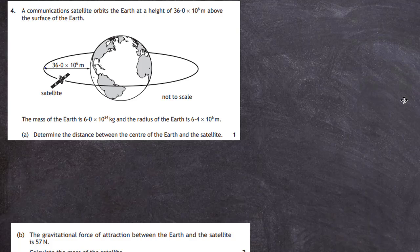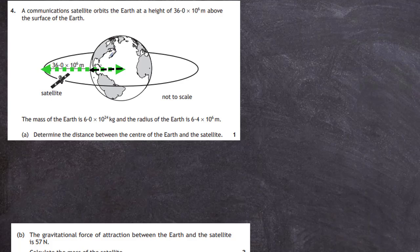In part A, we're asked to determine the distance between the centre of the Earth and the satellite. That's the distance from the centre of the Earth all the way out to the height of the satellite. We have to add on the radius, so we know that the radius goes from the centre to the surface — we'll call that RE, the radius of the Earth.